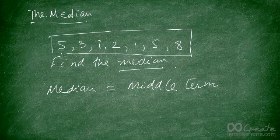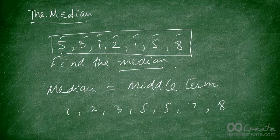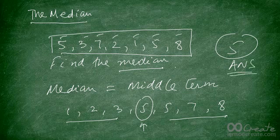After arranging the data we get: 1, 2, 3, then a couple of 5s — 5 and 5 — then 7 and 8. As you can see, the middle term is the fourth one because there are three terms on the left and three on the right. Therefore the answer is 5 — the median is 5.